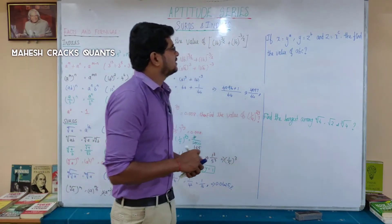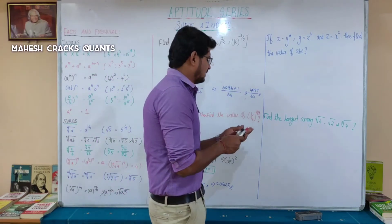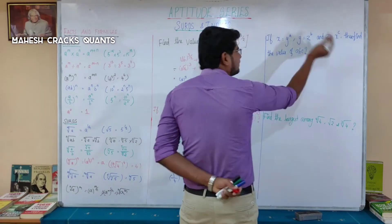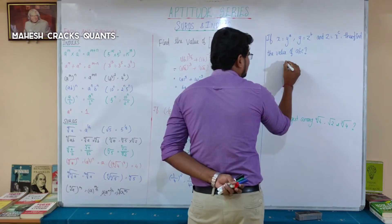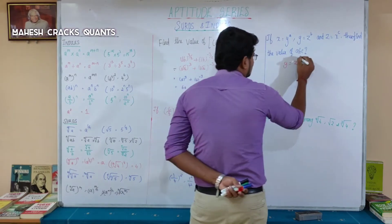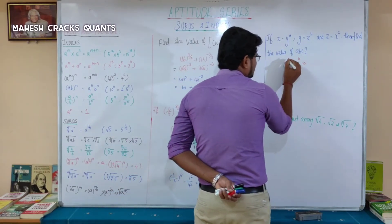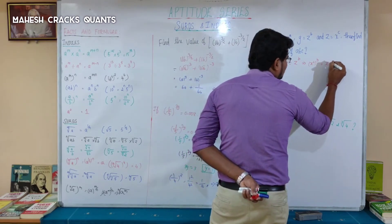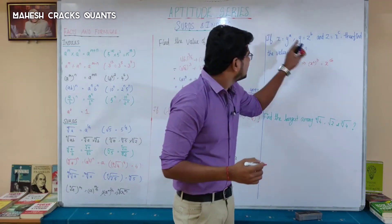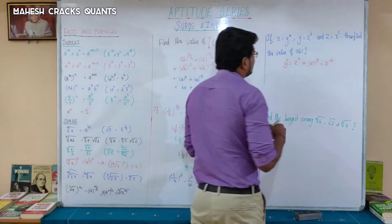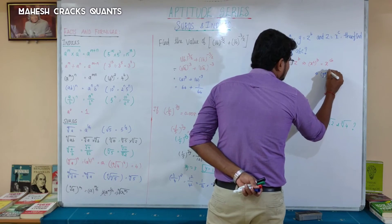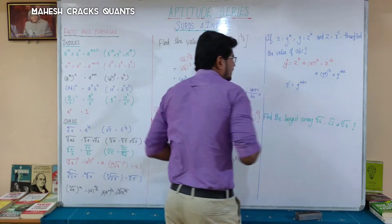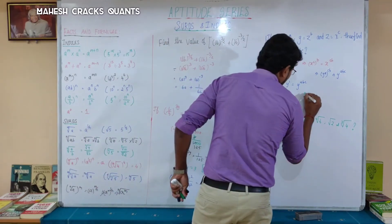If x equals y power a, y equals z power b, and z equals x power c, then find the value of abc. We substitute: x equals y power a. Since y equals z power b, substitute z equals x power c. So y equals x power cb. Then x equals y power a equals x power a times bc. Therefore a times bc equals 1, so abc equals 1.